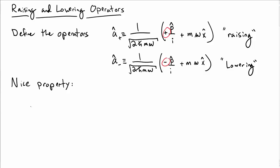So these really look kind of ugly, but they have a nice property, which is that if I take ħω times â₋â₊, so I multiply those two together, I've got this prefactor out here and then I've got the things in the parentheses which I'm going to multiply out.